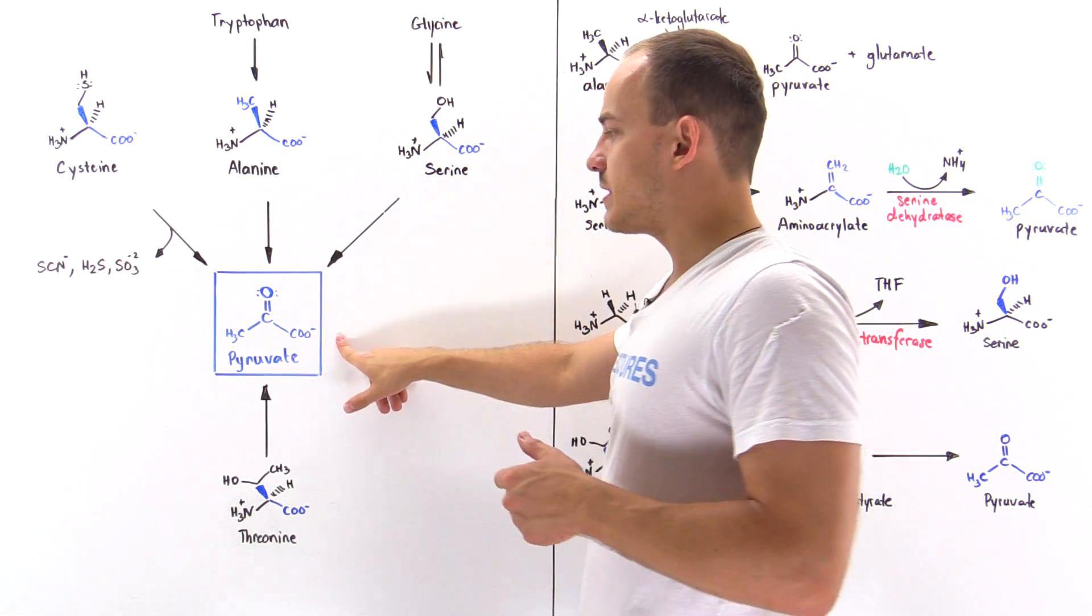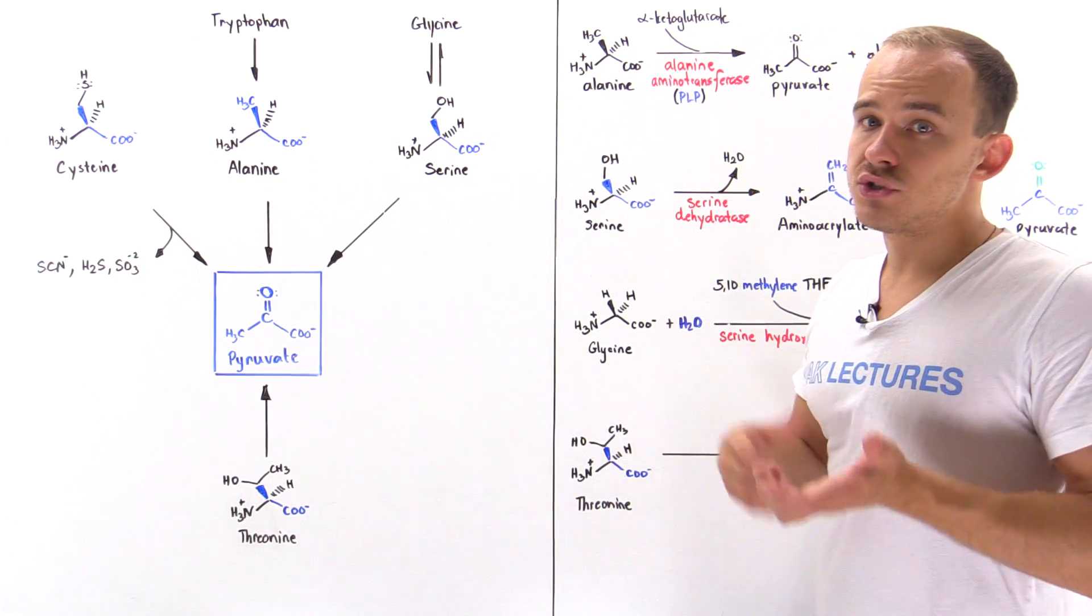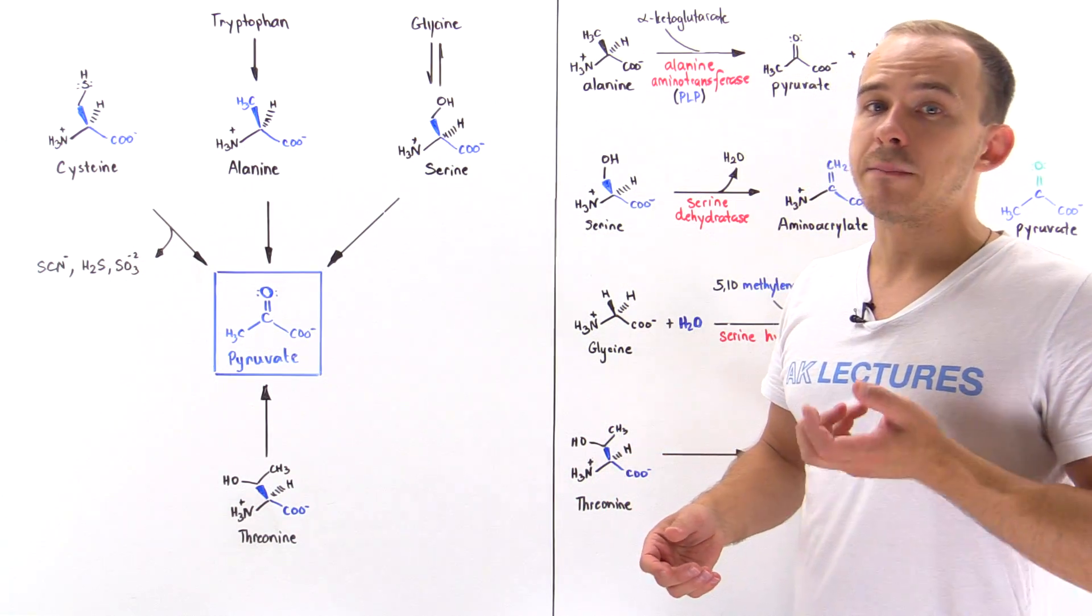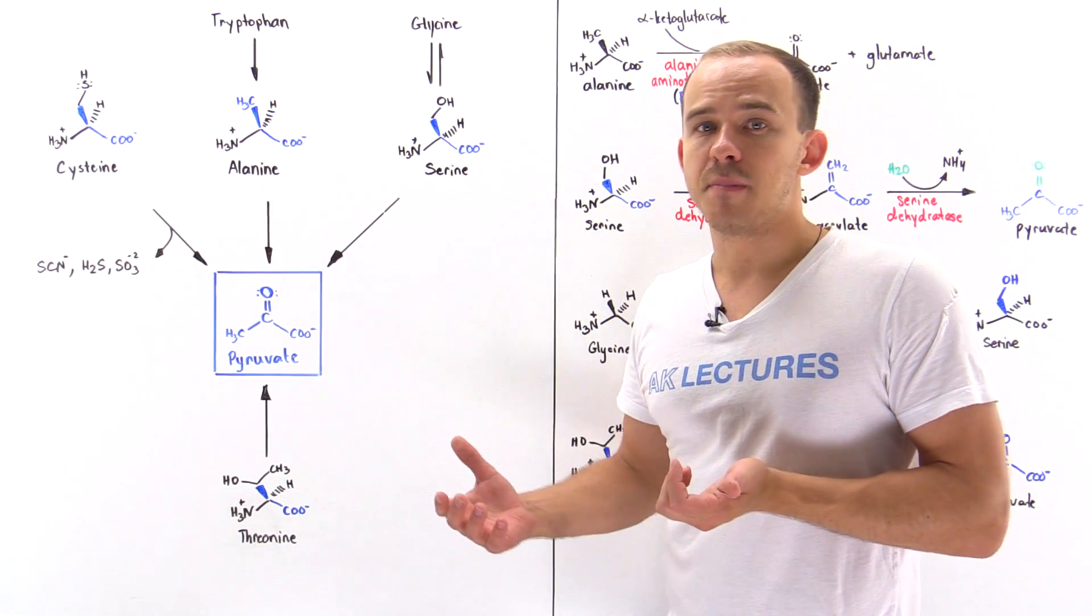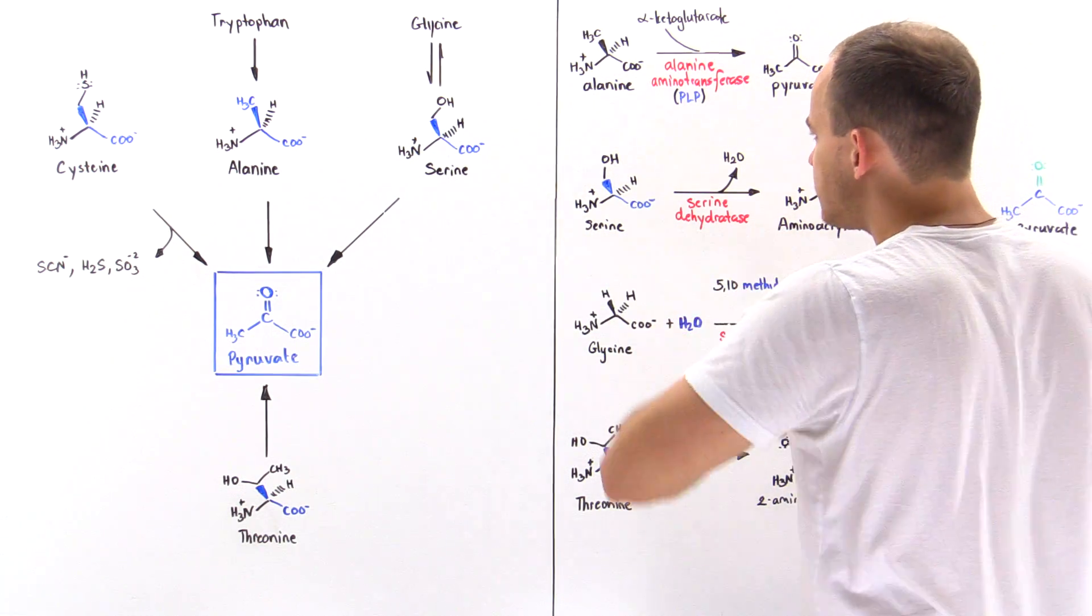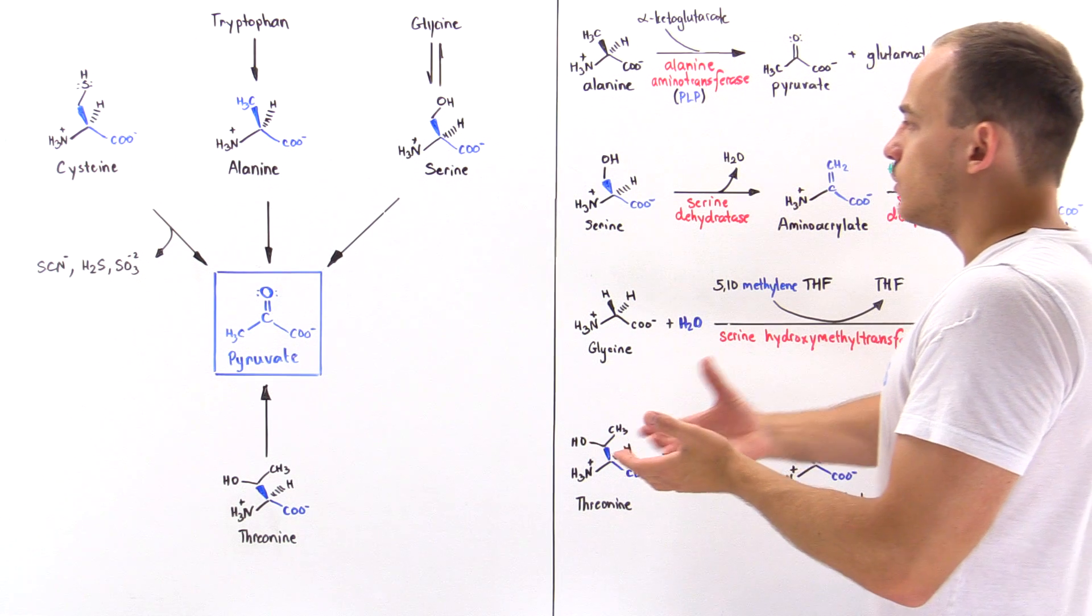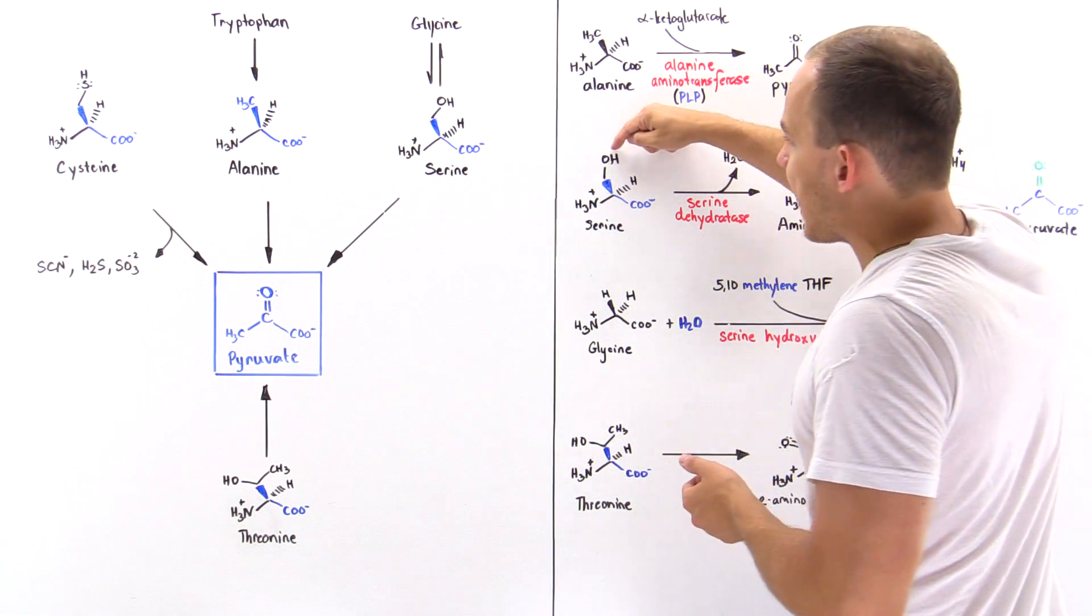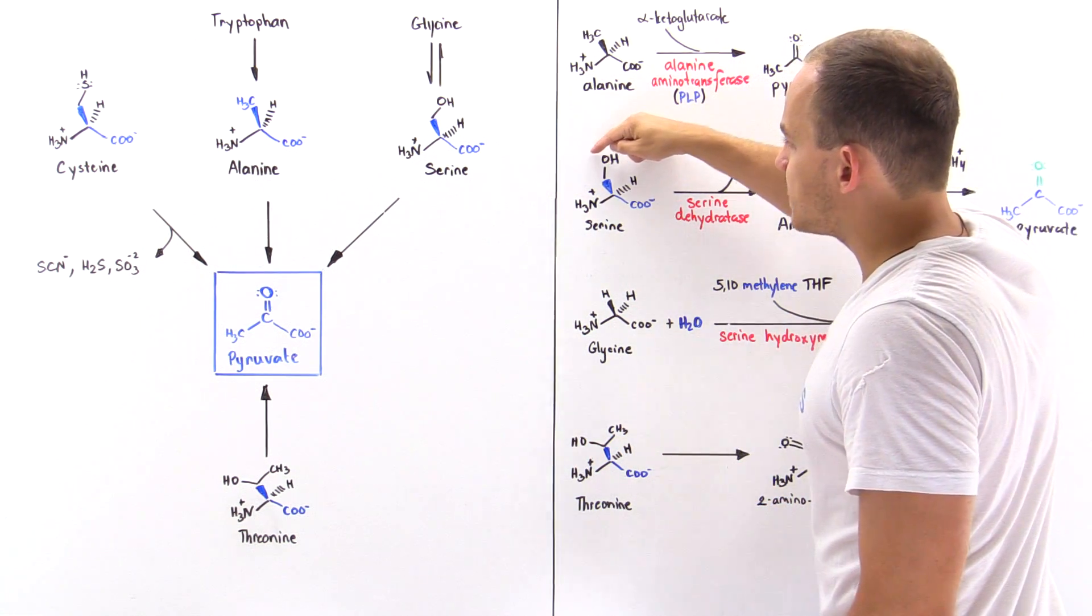Serine can be transformed to pyruvate. We actually saw before that this was a two-step process catalyzed by serine dehydratase. In the first step, we basically have a water molecule that leaves. The hydroxide group combines with this H+ ion to form a water, and the two electrons in this bond basically form a double bond between this carbon and this carbon.